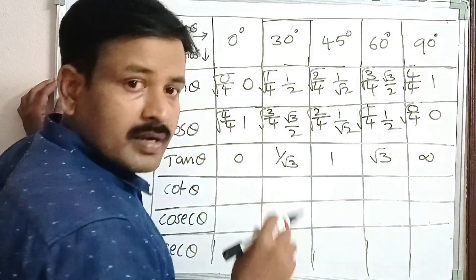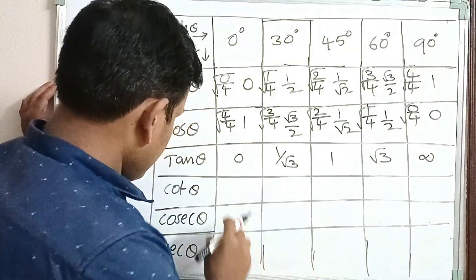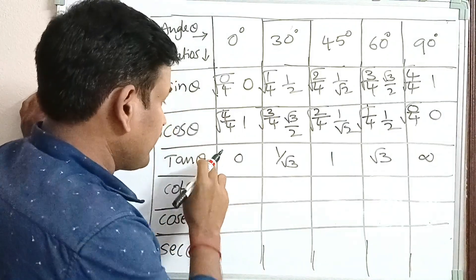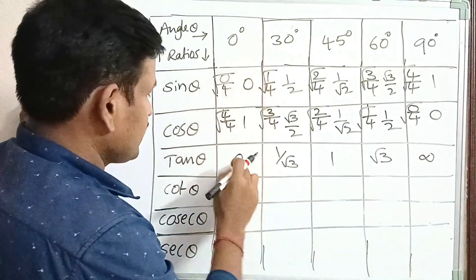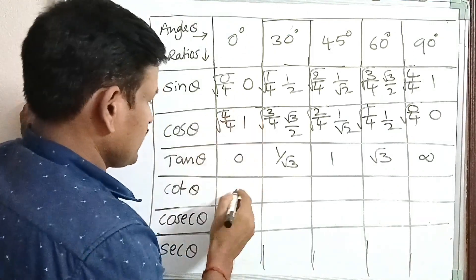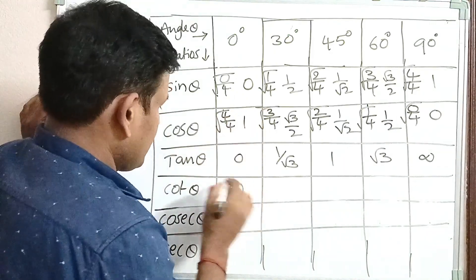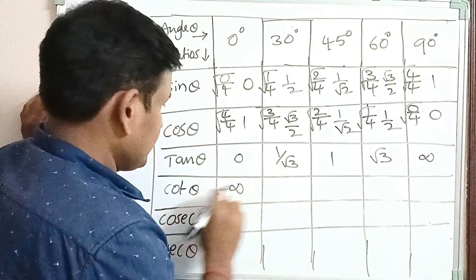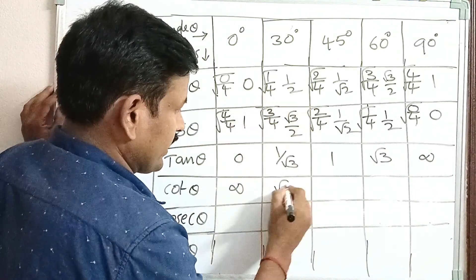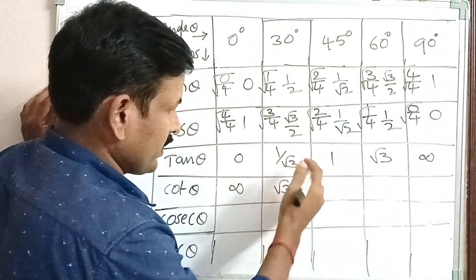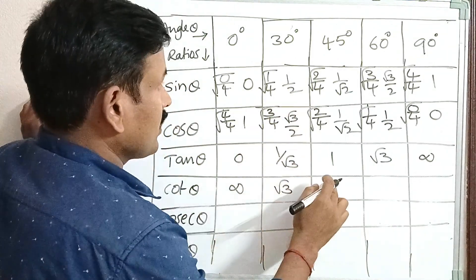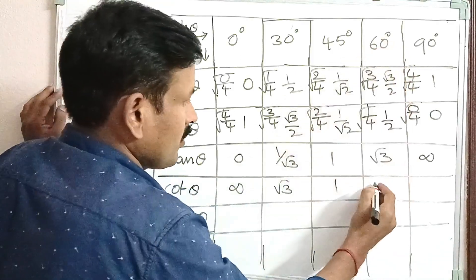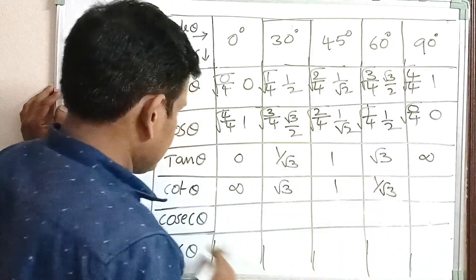Cot theta is the inverse ratio of tan theta. So tan 0 is 0, meaning cot 0 is infinite. Tan 30 degrees is 1 by root 3, so cot 30 degrees is root 3. Cot 45 is 1. Next, cot 60 is 1 by root 3.